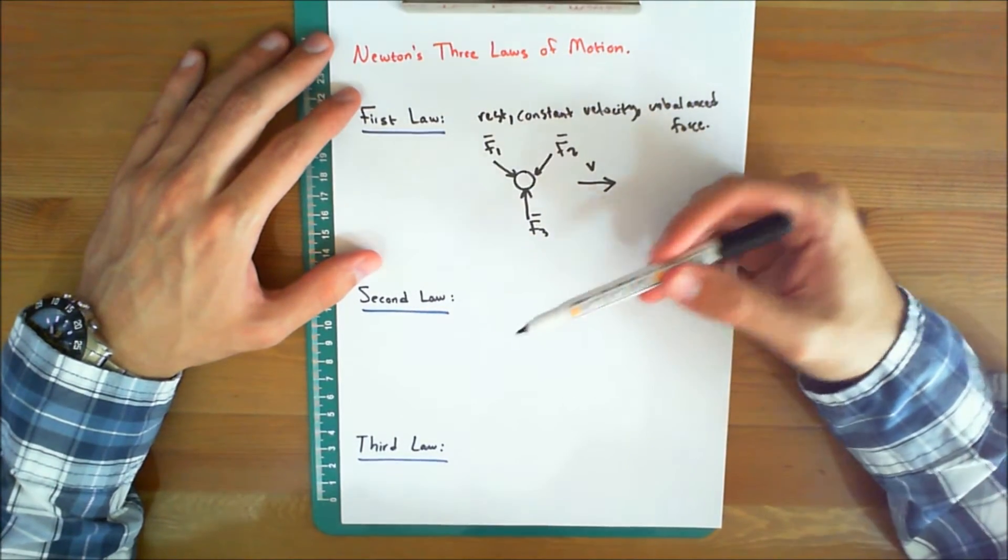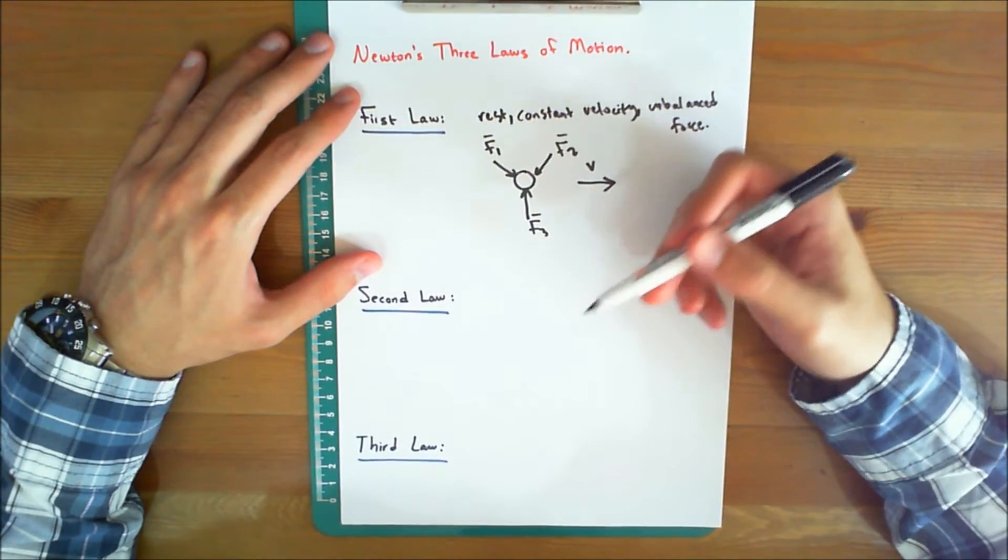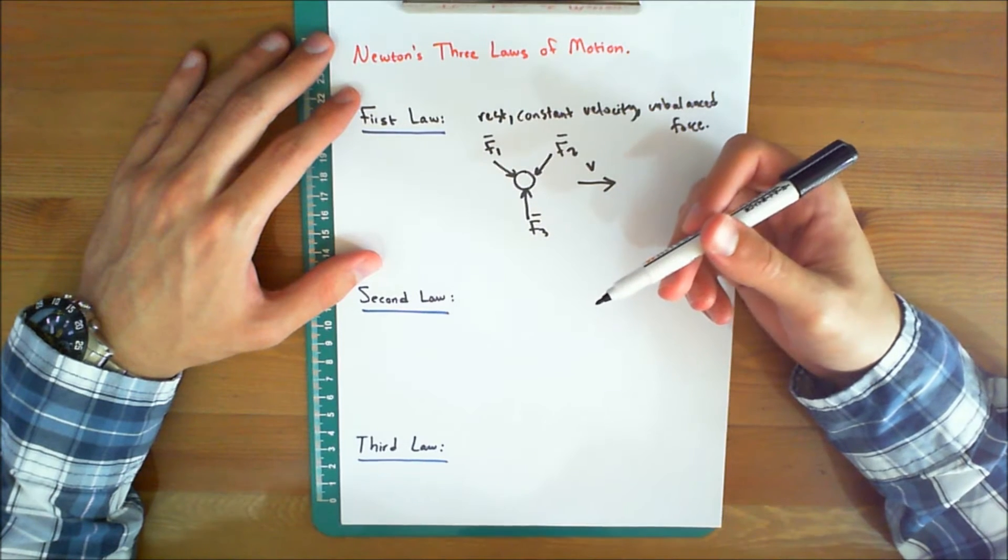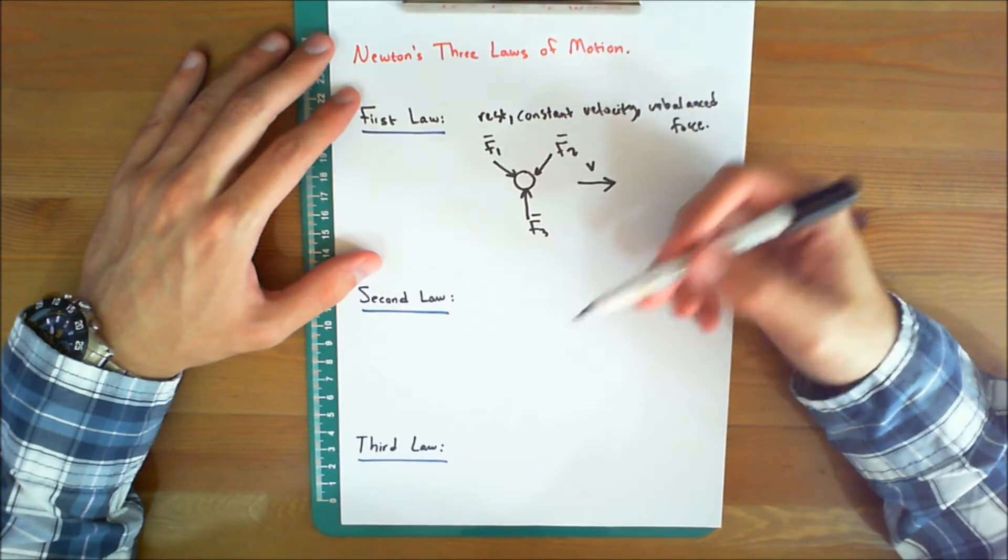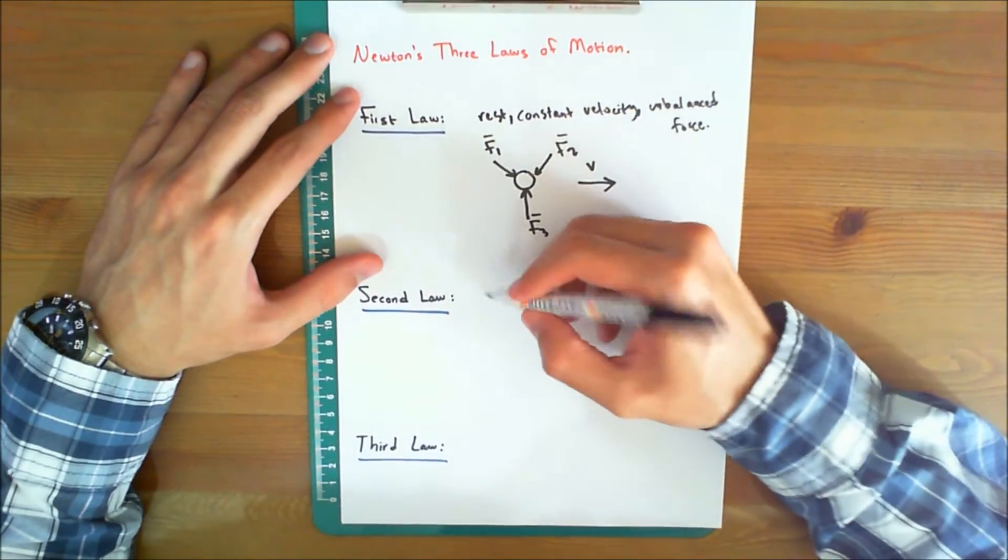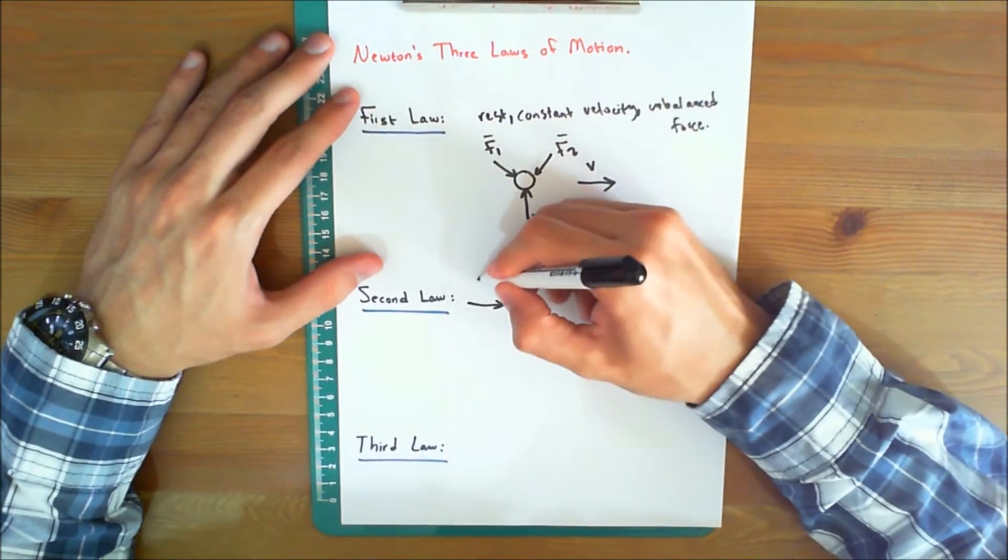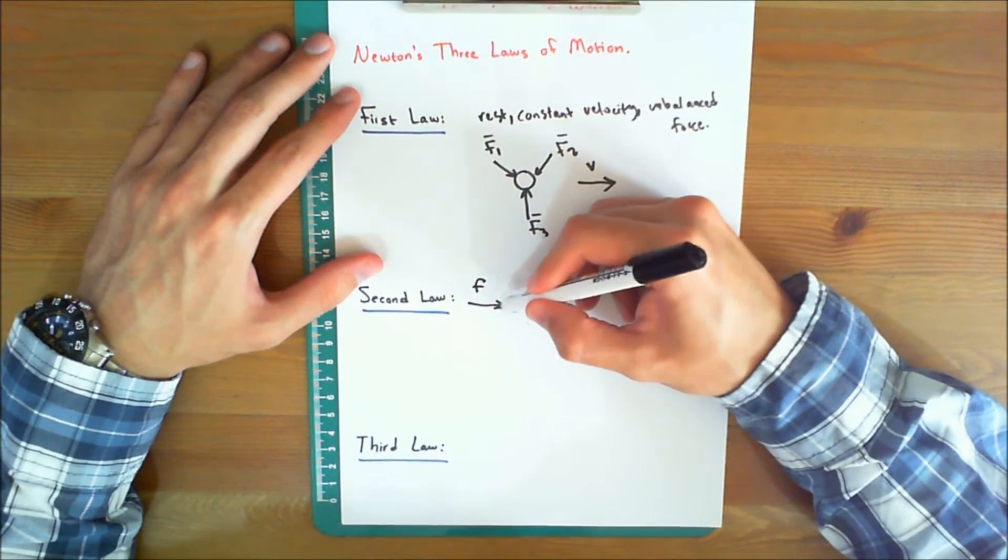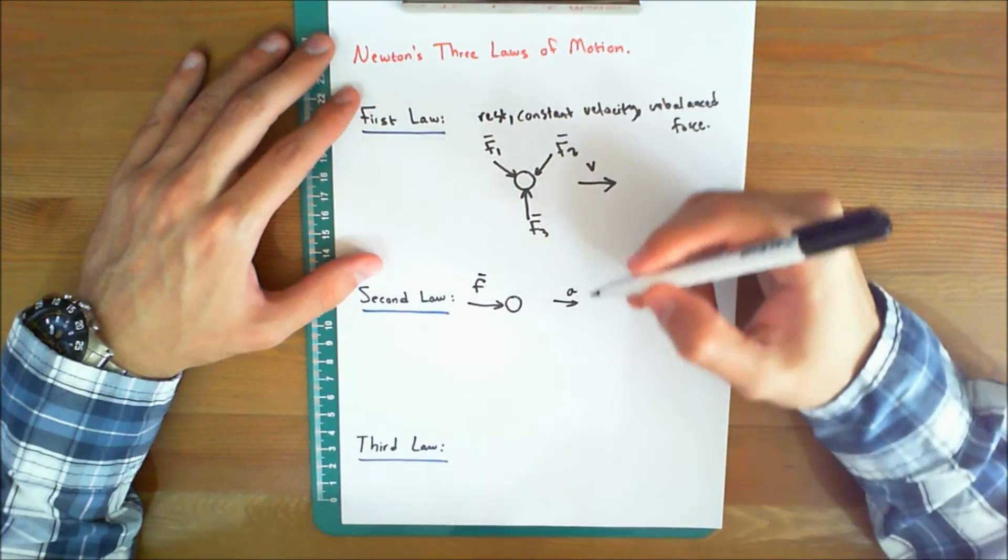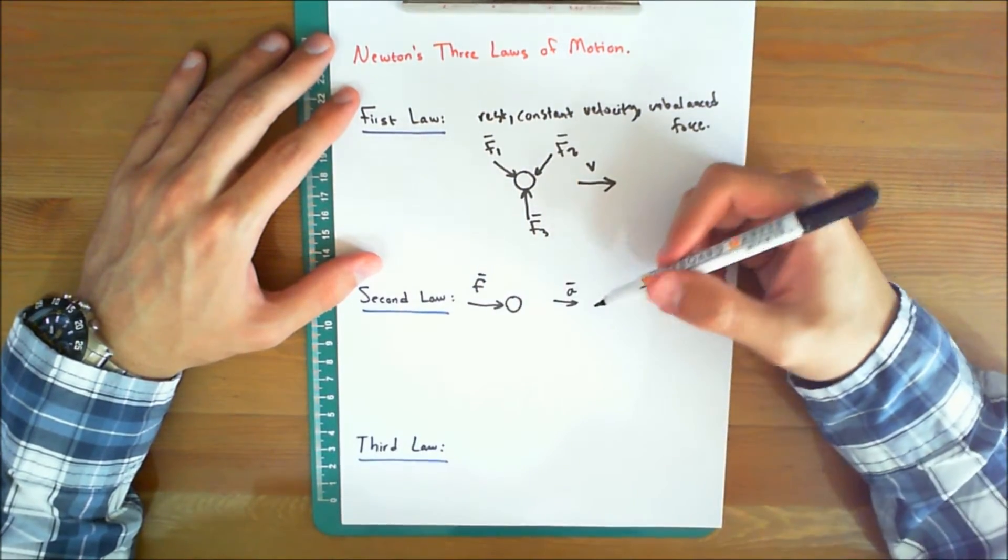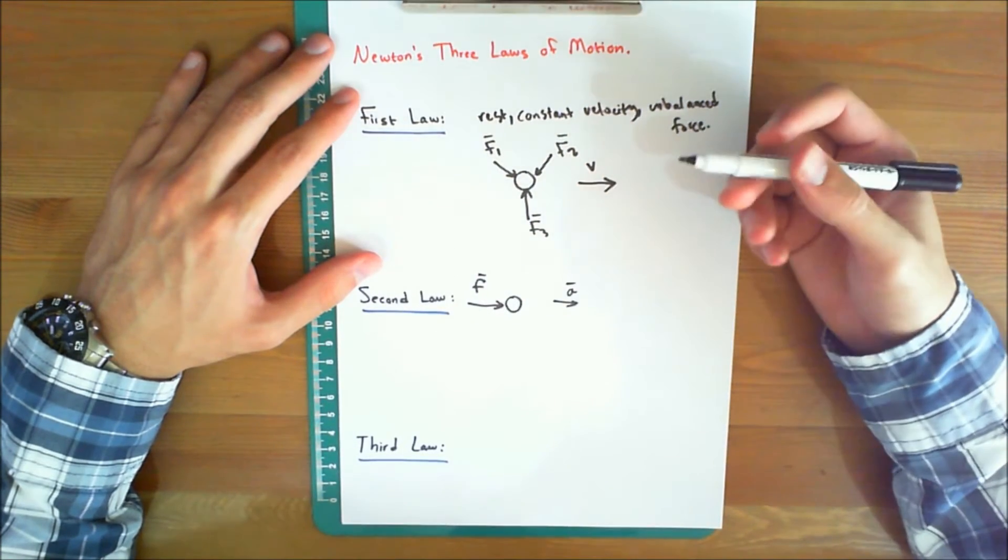As for the second law, a particle acted upon by an unbalanced force F experiences an acceleration A that is the same direction as the force, and a magnitude that is directly proportional to the force. So whenever a particle acted upon by an unbalanced force F experiences an acceleration, let's say that this is a particle and it undergoes this force, it experiences an acceleration A that has the same direction as the force and a magnitude that is directly proportional to the force.